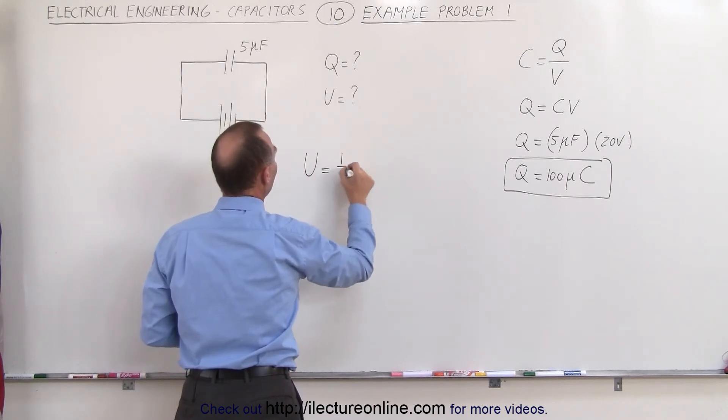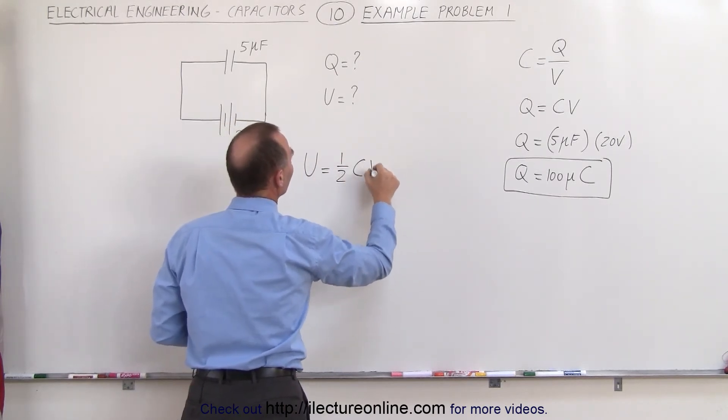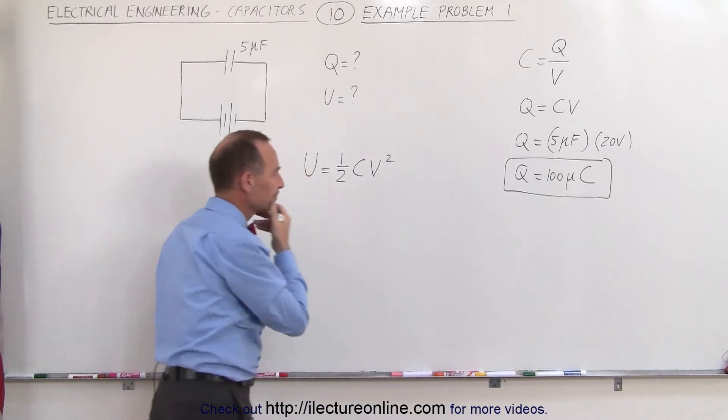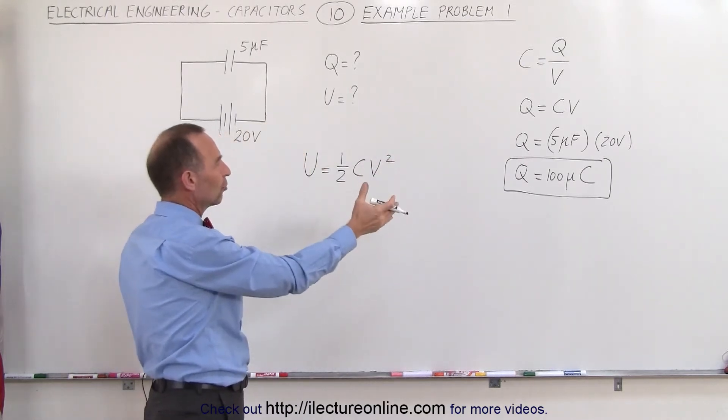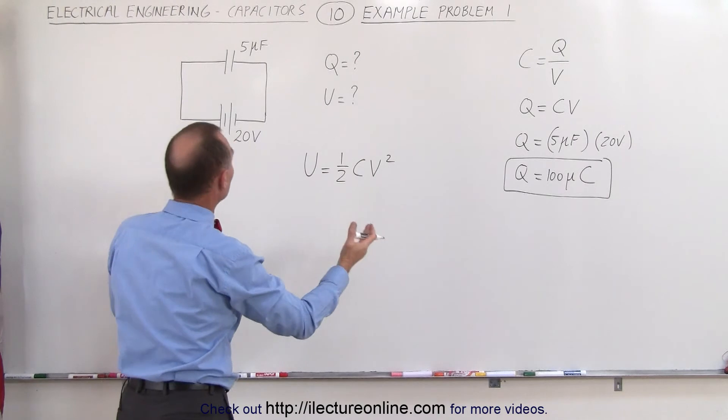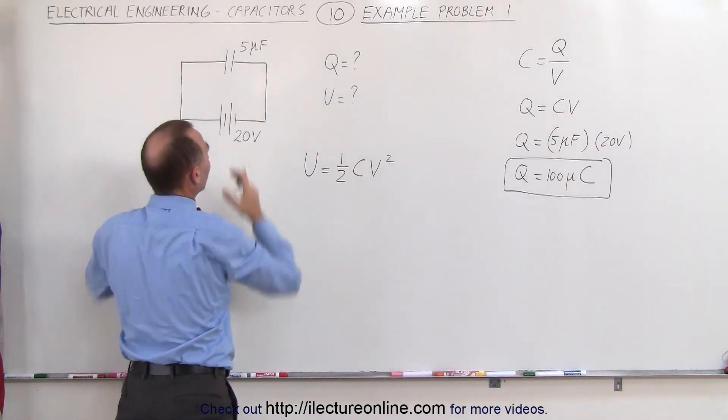U is equal to 1 half times the capacitance times the voltage squared. We have the charge, but we need to know the voltage. But in this particular case, we know that the voltage is 20 volts across here.